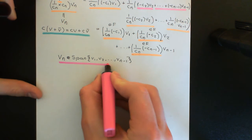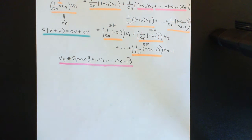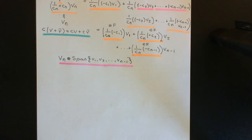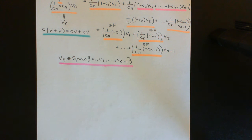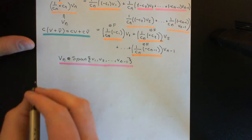That's a key property of linearly dependent sets of vectors: one or more of the vectors can be written as a linear combination of all of the other vectors in the set. And this is not going to be true if the set of vectors is linearly independent — that's what I now want to show.